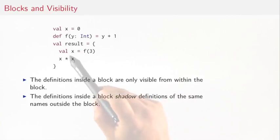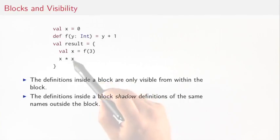So that means that, for instance, here the name f is visible in the block. It refers to this outer name f. But the name x here refers to the inner name x, not the outer name x. The inner name x shadows the occurrence of the outer name.